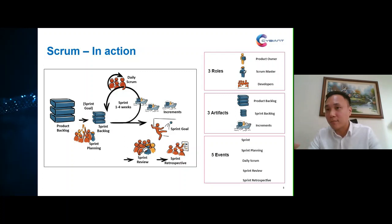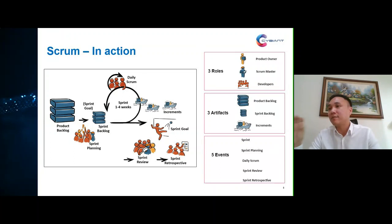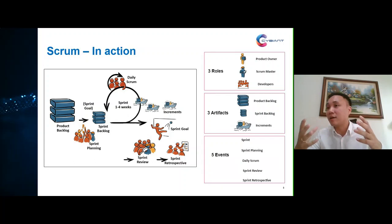During the sprint review, the team gathers feedback from stakeholders. Before the sprint ends, there is also a sprint retrospective — a time for the scrum team to reflect and discuss how they can improve in terms of quality, productivity, and efficiency for the next sprint. That, in summary, is how scrum works in practice. After this I'll explain the three roles, three artifacts, and five events in more detail, and then relate how scrum works using a real business case scenario.